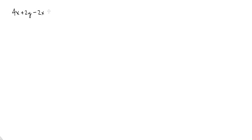Let's start with just a plain old algebra expression. How about if I wrote 4x plus 2y minus 2x, and I asked you to simplify that. I don't think you'd have any trouble. You would tell me, well, these are like terms. So I can just do 4x minus 2x is 2x. And then 2y doesn't have a like term, so that's just plus 2y.